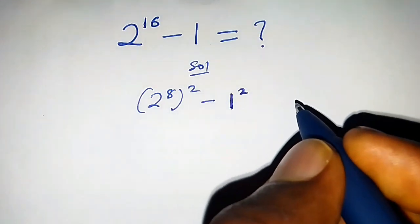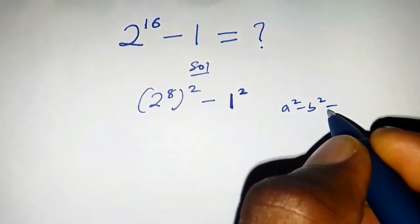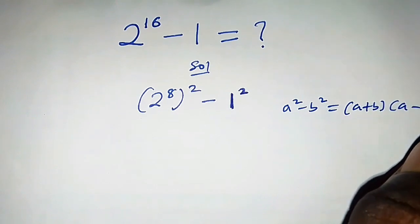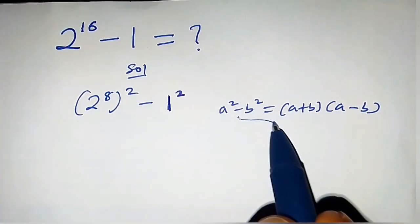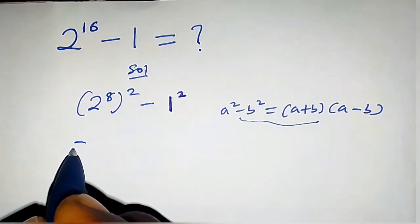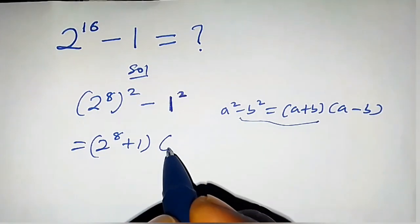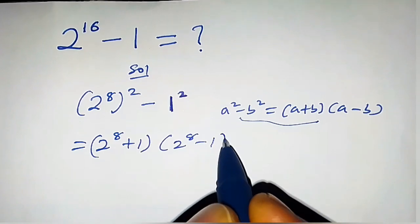Now, we know that a squared minus b squared is the same thing as writing a plus b times a minus b. So, using this property, this equals 2 raised to the power 8 plus 1 times 2 raised to the power 8 minus 1.